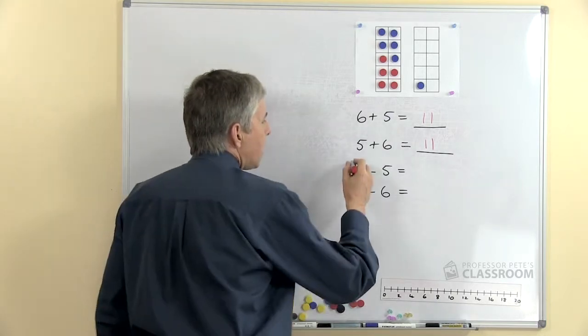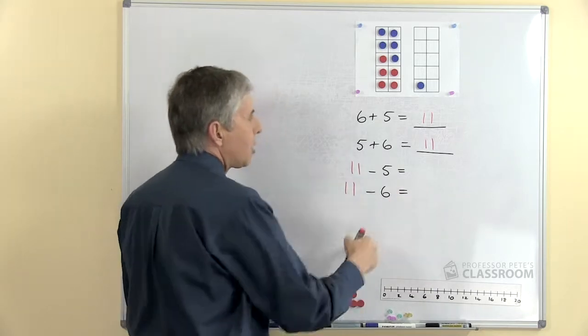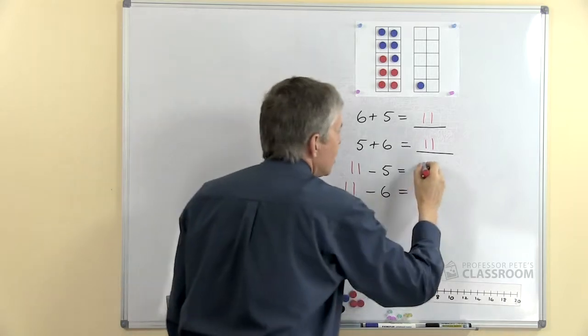And then of course we can add to that related subtraction fact. So starting with 11, we can take away five using the ten frames again, we can start with 11 and take away six.